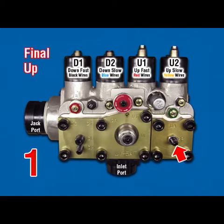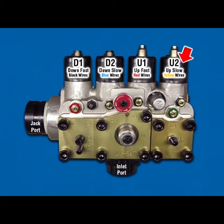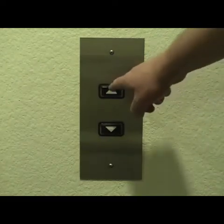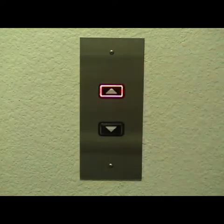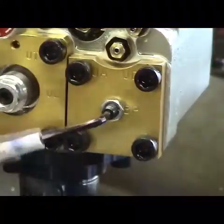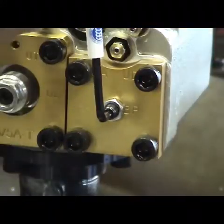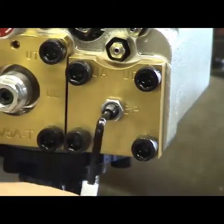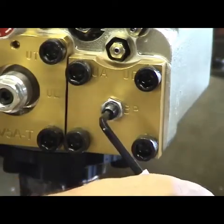BP Bypass. Car at lower floor with no load. Disconnect U2. Register an up call — car should not move. Turn BP clockwise until car moves, then counterclockwise until car stalls, plus a minimum of one-half turn.